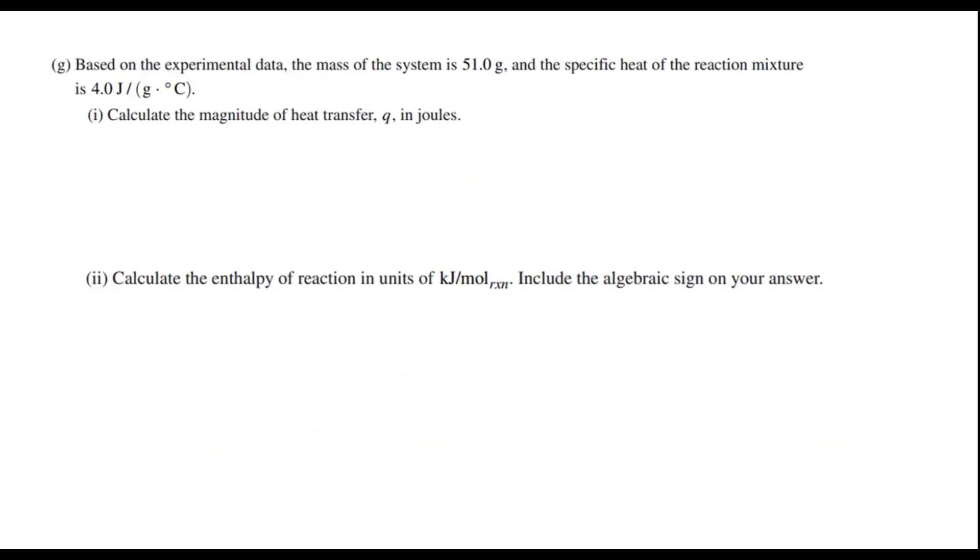Now part G, we have a Q equals MC delta T question. Because we're asked to calculate Q, it gives us the mass. We have the C given to us. We can calculate the temperature from the chart. The M, the mass, is 51.0 grams. The specific heat capacity of the mixture is about 4.0 joules per gram degree Celsius given to us in the problem. And the delta T, it looks like it went from 21.20 degrees up to 21.90 degrees. So that is a jump of positive 0.70 degrees Celsius. So your Q is about 140 joules. I'm limiting myself to two sig figs here just because of that 4.0 and the 0.70 over here. So we'll say 140 joules. So give yourself one point if you got that one.